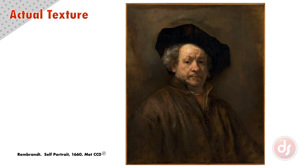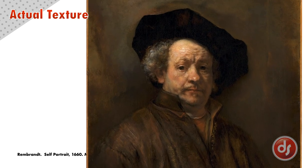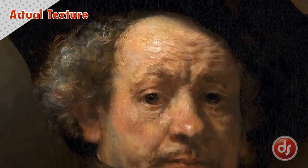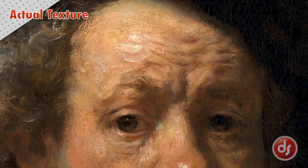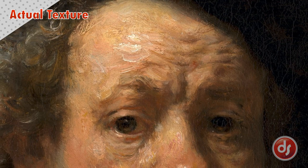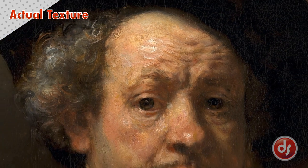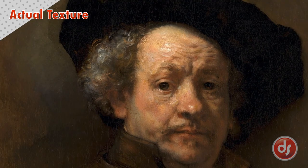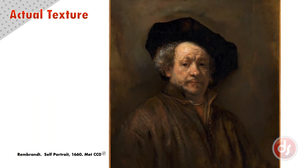Rembrandt used impasto to show the subtle textures of human skin. These areas of actual texture catch the light, creating a tactile quality suggesting the reality of pores and wrinkles. The delicate texture in his work seems to breathe life into his portraits, more so than the highly blended soft skin tones of some of his contemporaries. He also balanced areas of texture against smoothly painted areas to make the figure pop off the canvas and interact with the viewer.